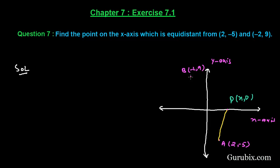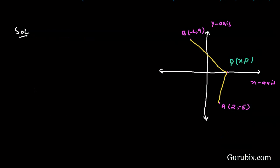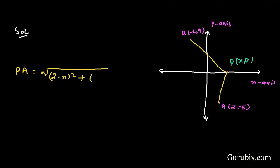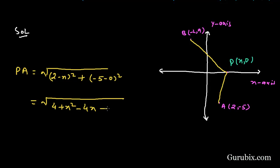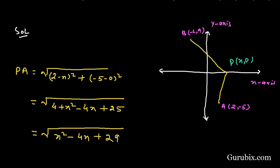We shall apply the distance formula to find the distance between points P and A. PA equals the square root of (2 - x)² + (-5 - 0)², which equals the square root of (4 + x² - 4x + 25), giving us PA = √(x² - 4x + 29).